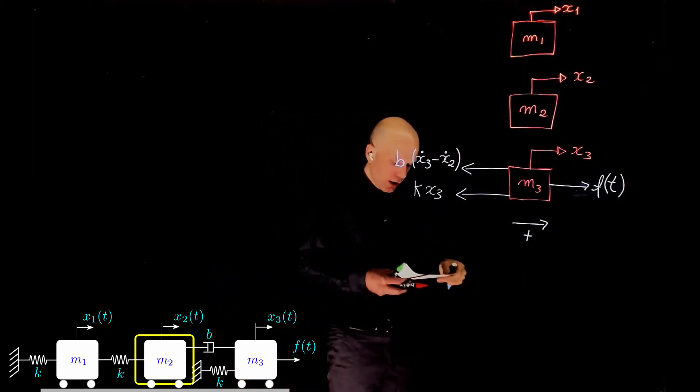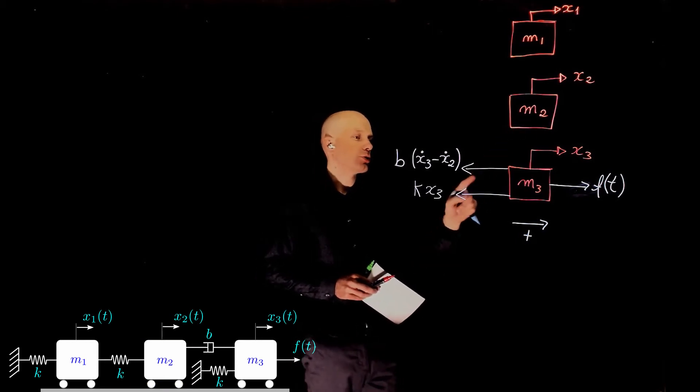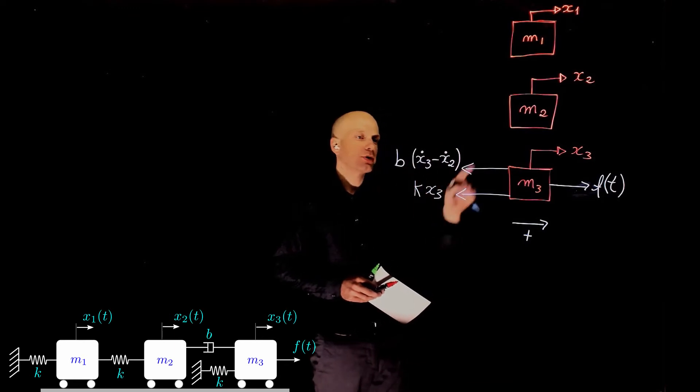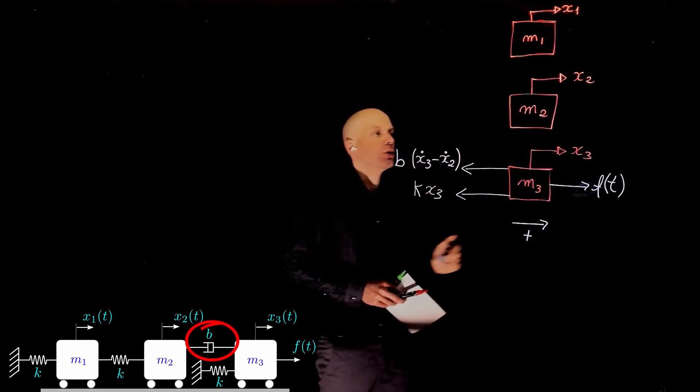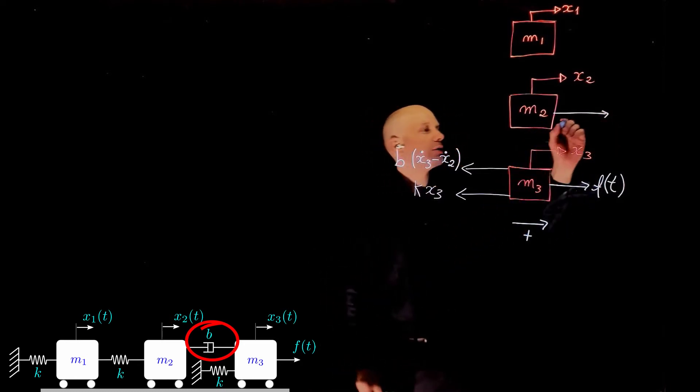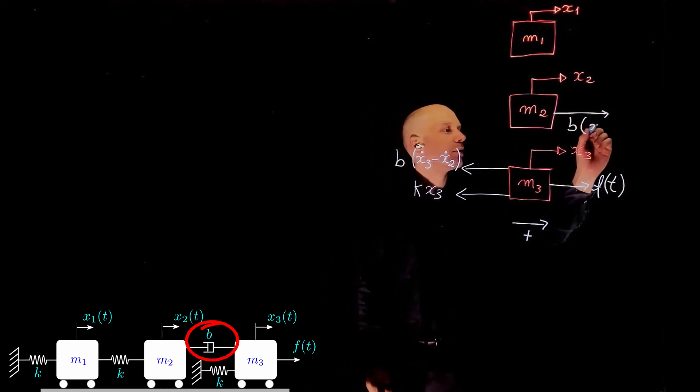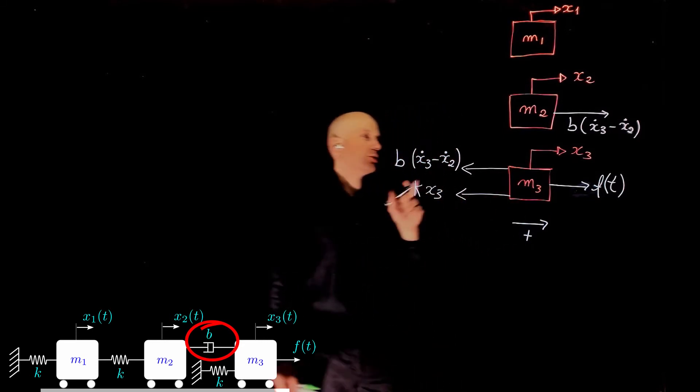Now let's move on to m2. m2 is connected to the same damper. So as you saw before, they are connected, so this force due to the damper here needs to be the same force that pulls m2 to the right. We have a force here and this will be b(x3 dot minus x2 dot), which is the force due to the damper.